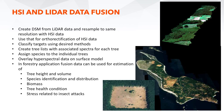Here is a simple example of hyperspectral and LiDAR data fusion in a forestry application. You first create a digital surface model from LiDAR data and resample it to the same resolution as the hyperspectral data. Then you use that for orthorectification of the hyperspectral data. You classify the targets using your chosen methods, then create tree lists with associated spectra for each tree and assign species to individual trees. You then overlay the hyperspectral data on the surface model for illustration, as seen in the top right corner.